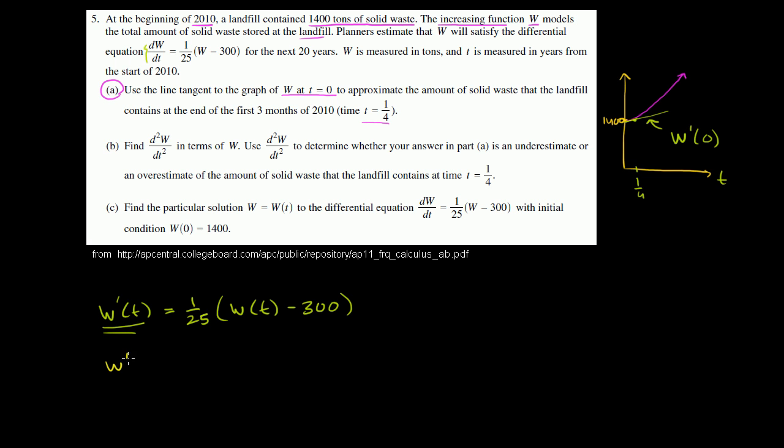The slope of that line is just the derivative of w evaluated at 0. So let's take the derivative of w and evaluate it at 0. So we have w prime of 0 equals 1 over 25 times w of 0, which we know. This is 1,400 tons of solid waste. This is how much waste there is at time 0, minus 300.